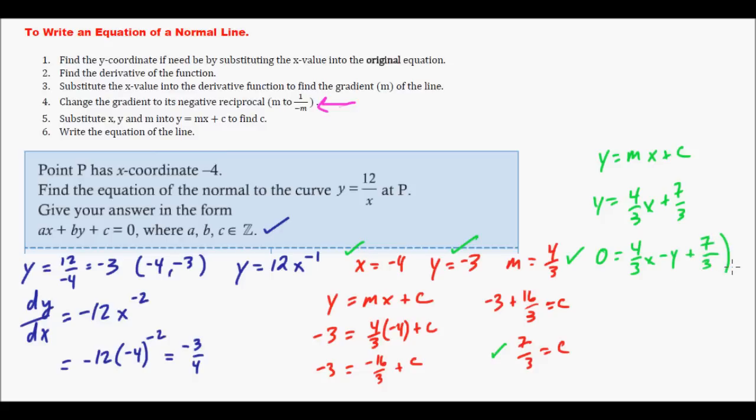To get rid of the denominator, because they want it as an element of integers here, you just multiply it by 3. So you're going to get zero equals 4x minus 3y plus 7, and you are good to go. It doesn't matter if the zero is on the left side - it's the same, it's equivalent. So there you go. The only difference in that one is when it is a normal, you have to change the negative reciprocal on the gradient. Everything else works exactly the same.